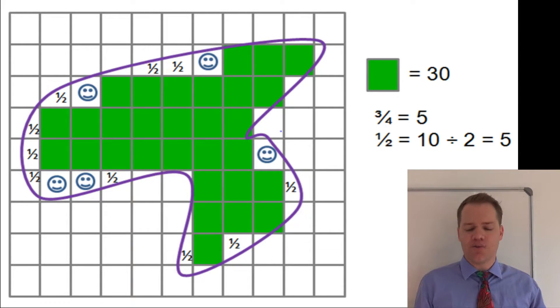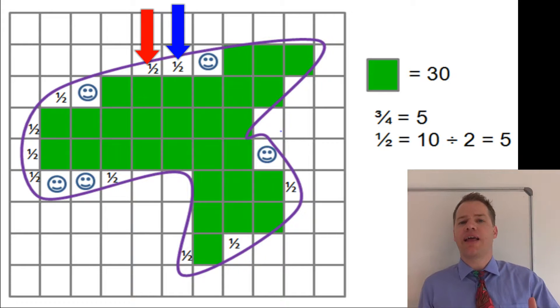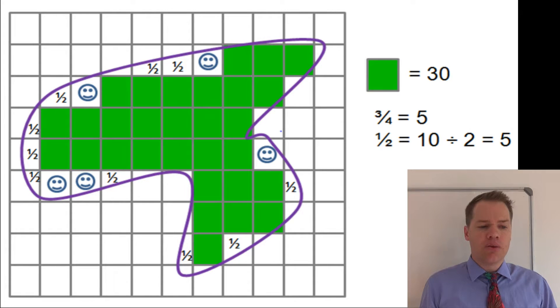And then we are going to count all the half squares. Once again, you might want to point out that all the halves are not exactly the same size. Once again, we have smaller halves and bigger halves, like the two indicated with the arrows there, and the one half is slightly bigger than the other one, and that's once again how they cancel each other out.